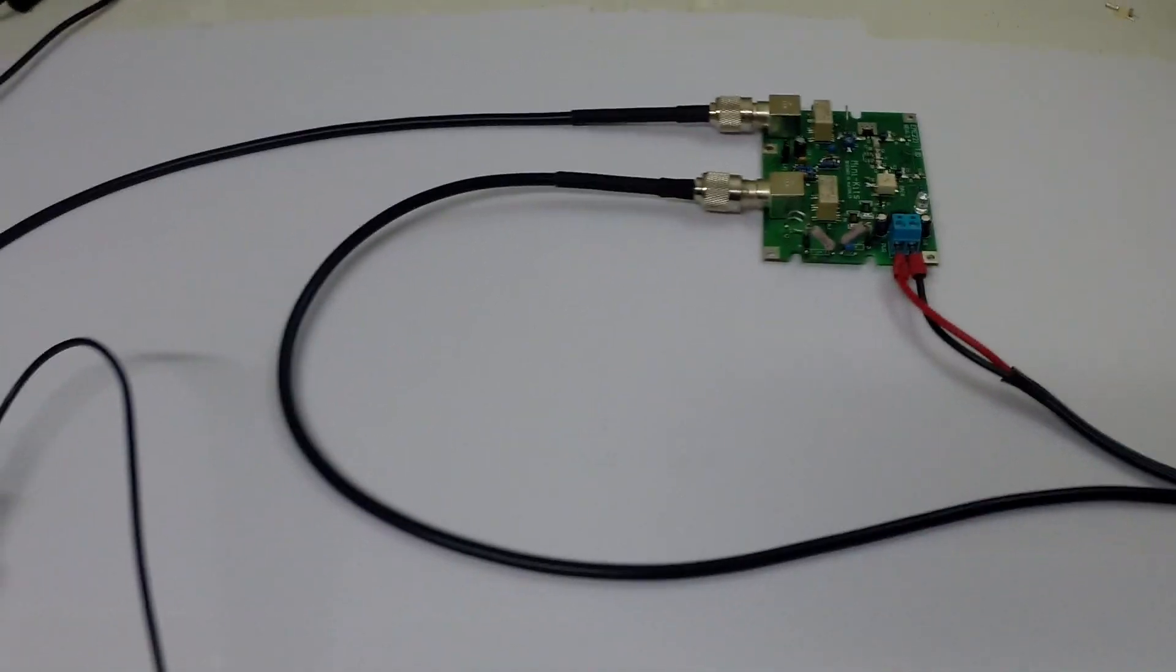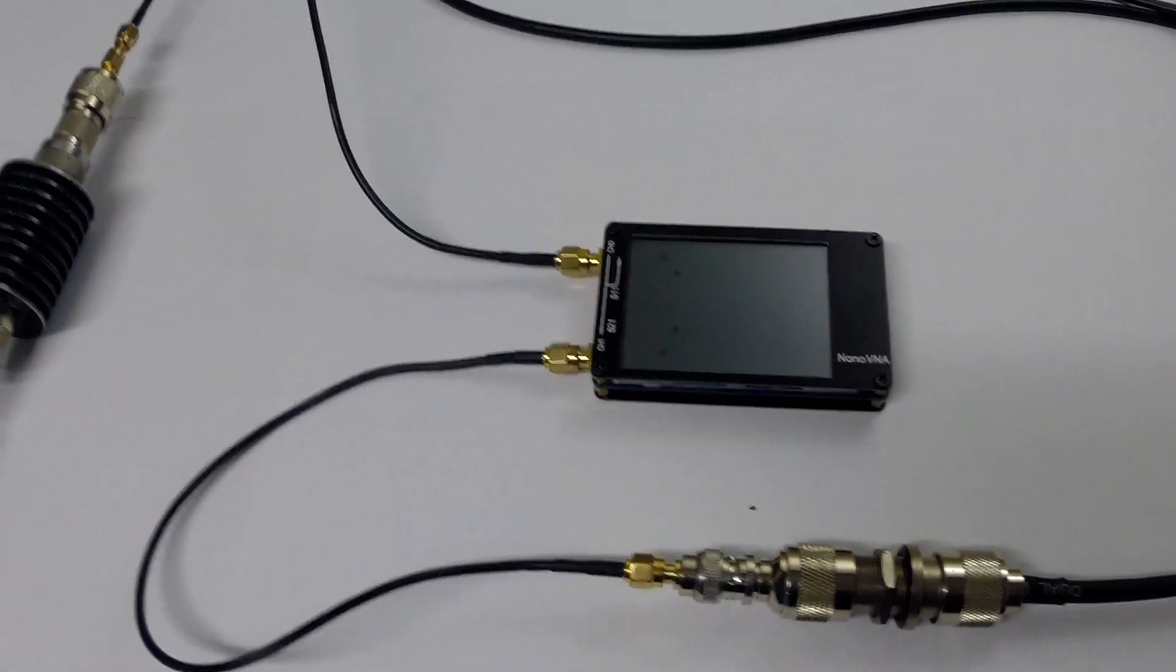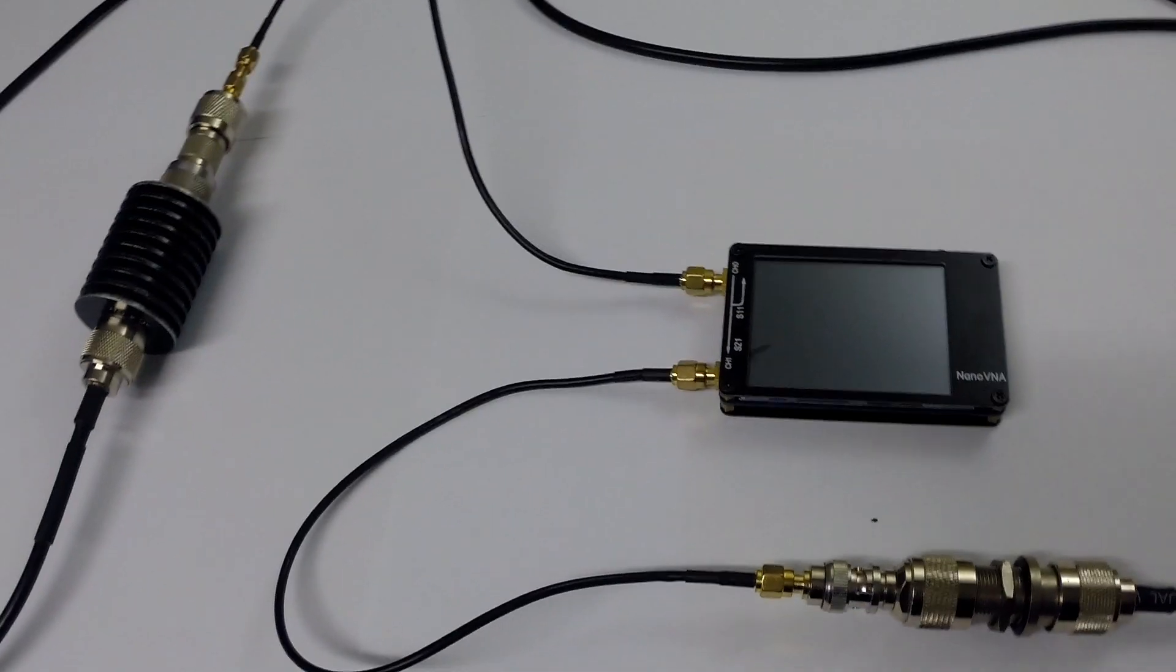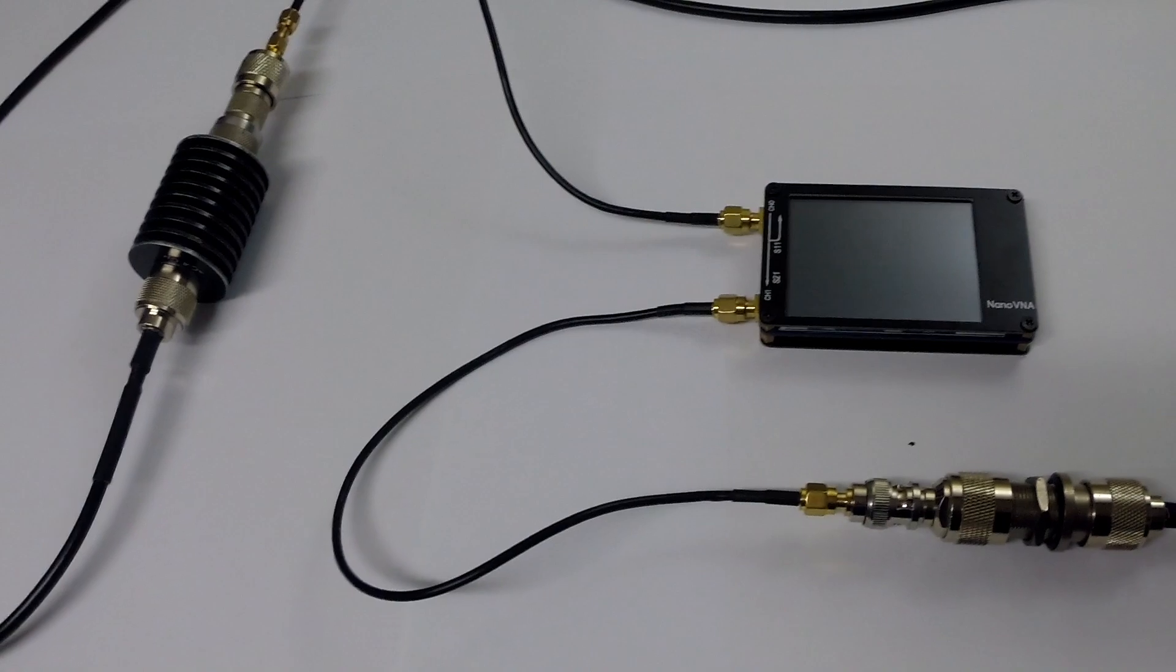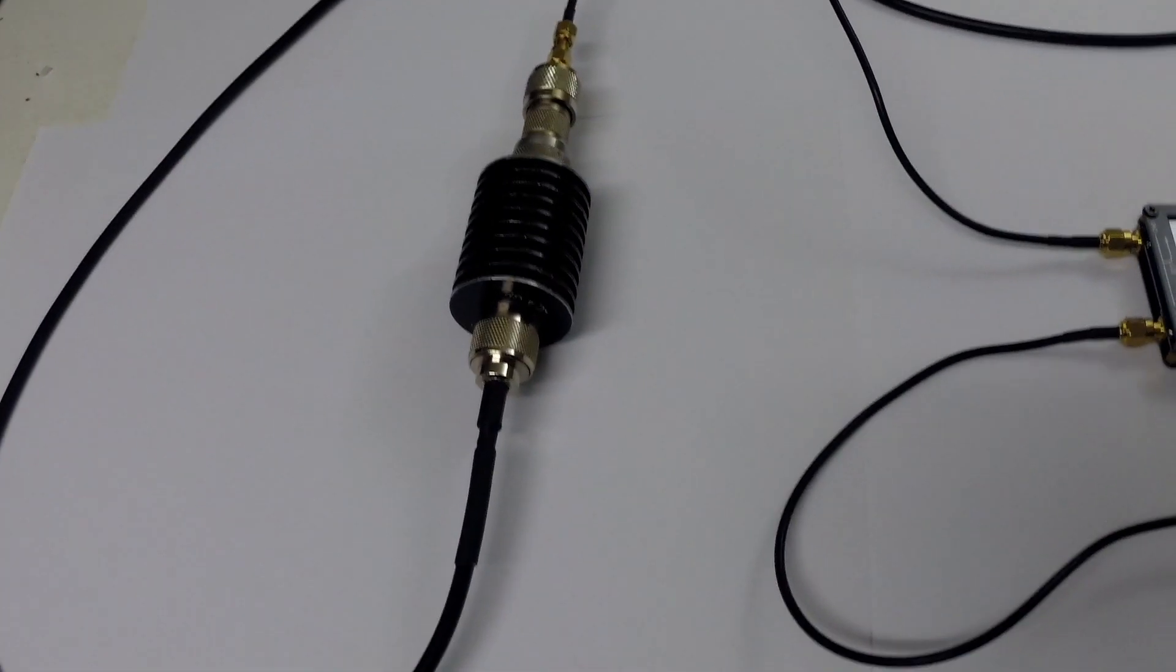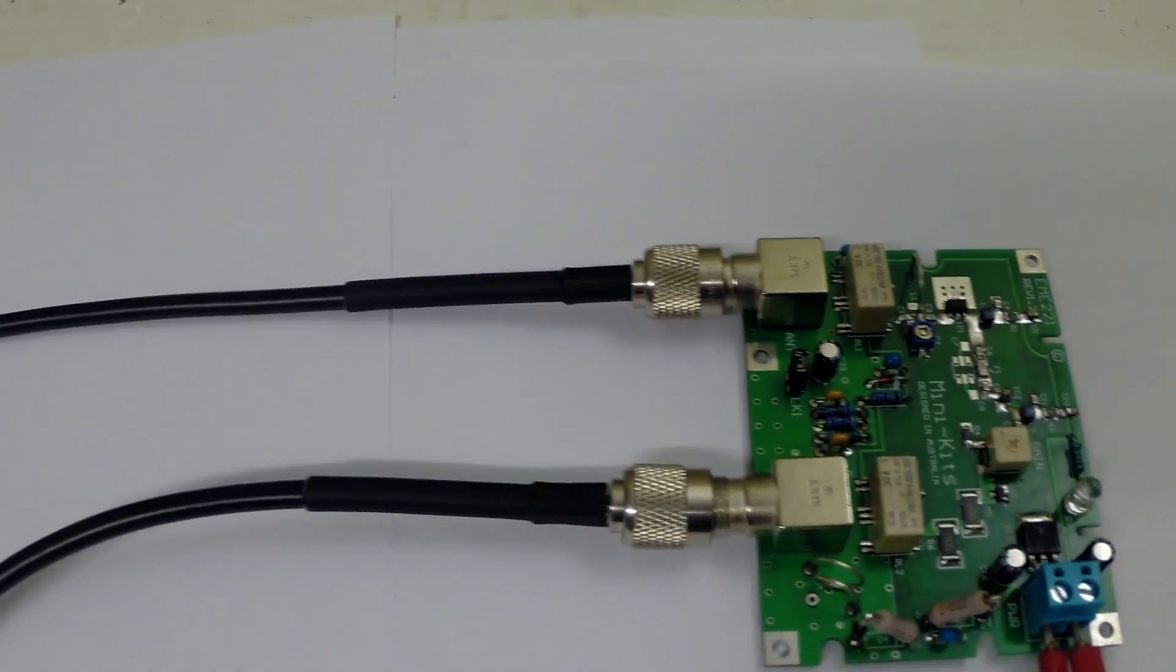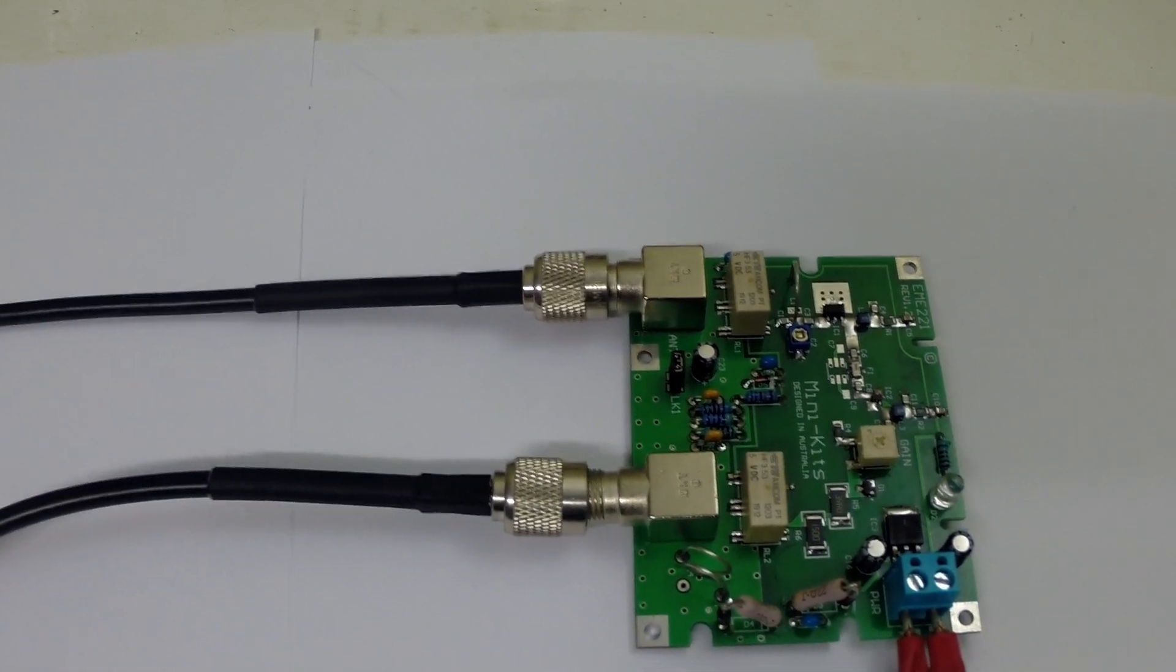Now the other thing that's very important in this setup is that the VNA be calibrated. So what we want to do is we want to calibrate out, zero out all the characteristics of the test leads, the attenuator, we're going to get all the reactants out. So that all we're looking at is the gain at the end of the two coaxes going in and out of the preamp.